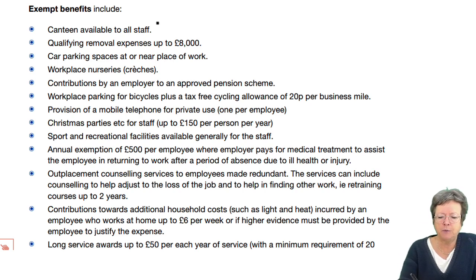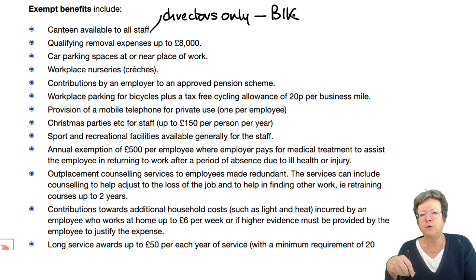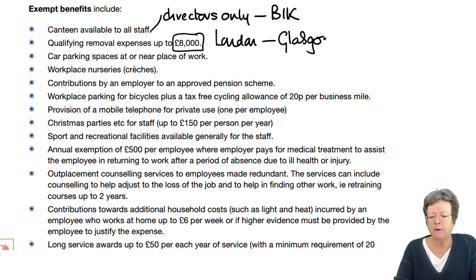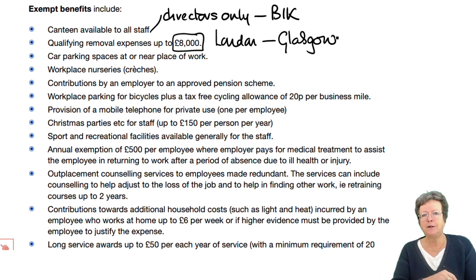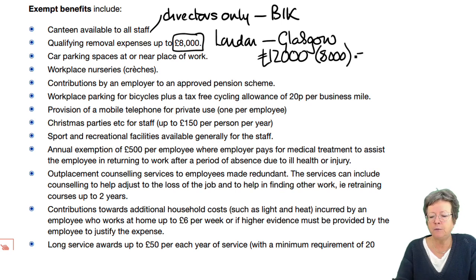The first one: a canteen must be available to all staff. If it says directors only, then it is a benefit in kind on them and there will be information in the question that allows you to do that calculation. If it's for all staff, it's exempt. Removal costs up to £8,000 — so if you move from London to Glasgow and your employer pays £12,000, the first £8,000 is exempt and you only pay tax on the remaining £4,000.